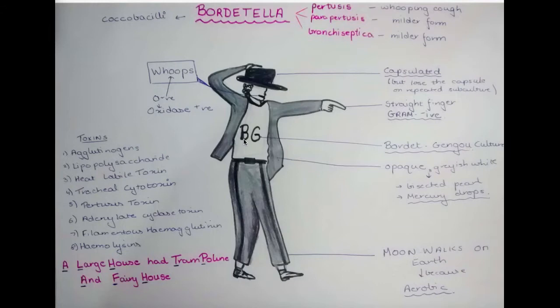BG stands for the Bordet-Gengou culture, and the greyish colour of Michael Jackson's suit denotes the colour seen in the Bordet-Gengou culture. That is, Bordetella species appear as opaque greyish-white colonies that look like a bisected pearl or mercury drops on the Bordet-Gengou culture.